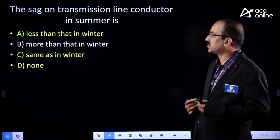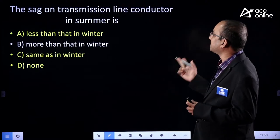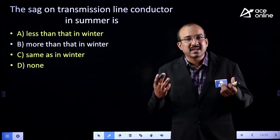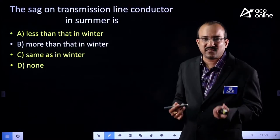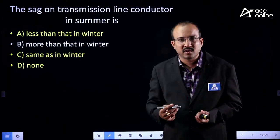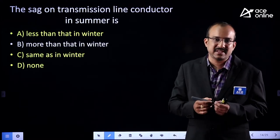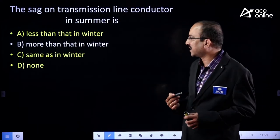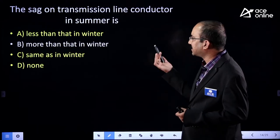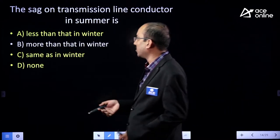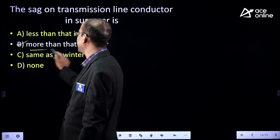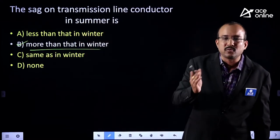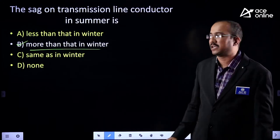The SAG in a transmission line conductor in summer is — in summer, the temperature is more, so as temperature increases, length increases, and automatically SAG gets increased. In summer, the SAG will be more than that of winter.